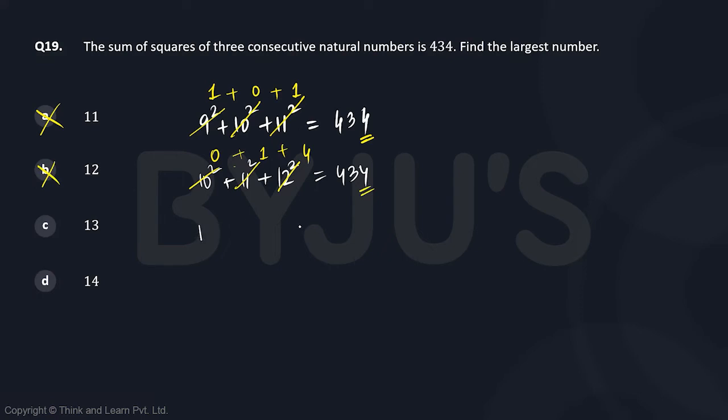Then we have 13 as the largest number, so 13 squared plus 12 squared plus 11 squared. This should end in 4. Let's verify: 11 squared will end in 1, 12 squared will end in 4, 13 squared will end in 9. 9 plus 1 plus 4 will end in 4, so 13 makes sense as of now.